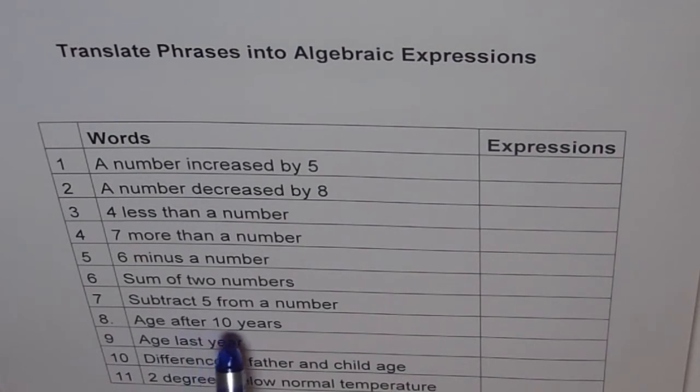Seven, subtract 5 from a number. Age after 10 years. So you can say let age be a. Then after 10 years, what will be the age? That is what you have to write as an expression. Age last year. Difference of father and child age. This is also two variables. You say let the age of father be f and let the age of child be c. Then difference will be f minus c. Two degrees below normal temperature. So we say let the normal temperature be t, and two degrees below will be t minus 2.